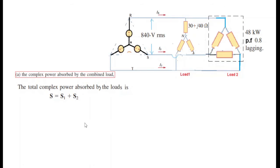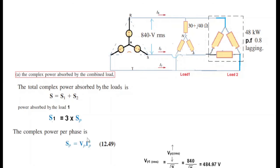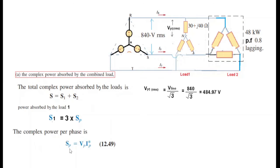For S1, it is three times the power consumed by a single phase. The formula is S = Vp * Ip conjugate. Phase voltage is calculated from line voltage divided by root 3: 840 divided by root 3 gives phase voltage of 484.97 volts.